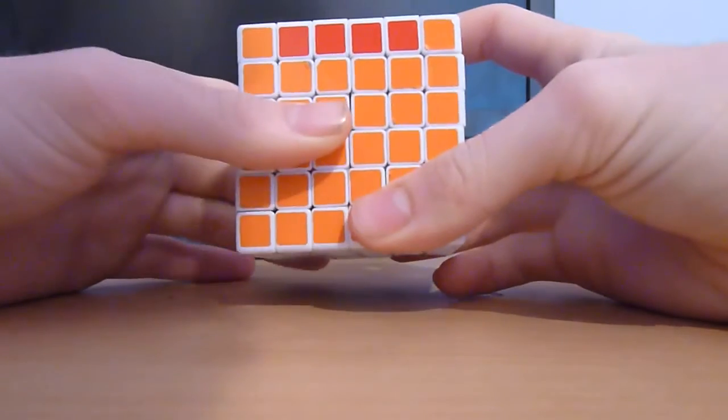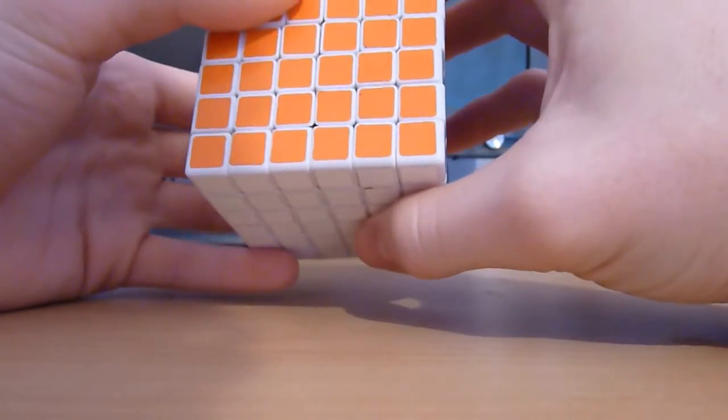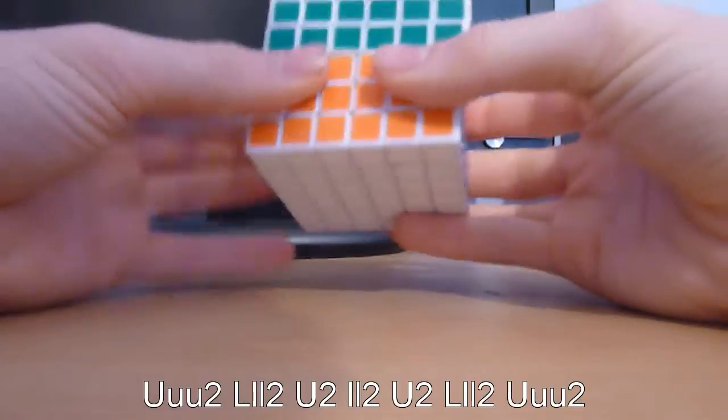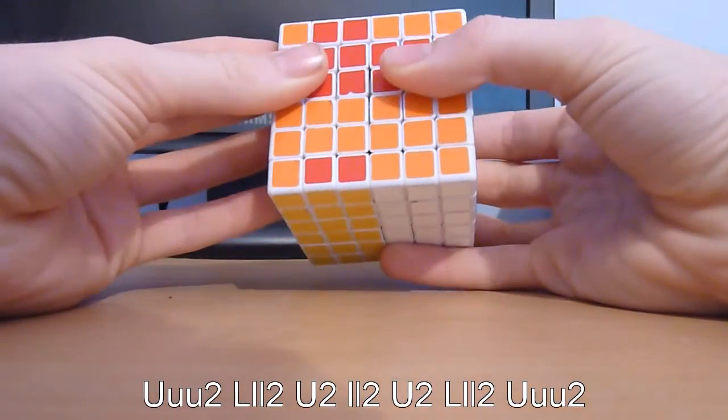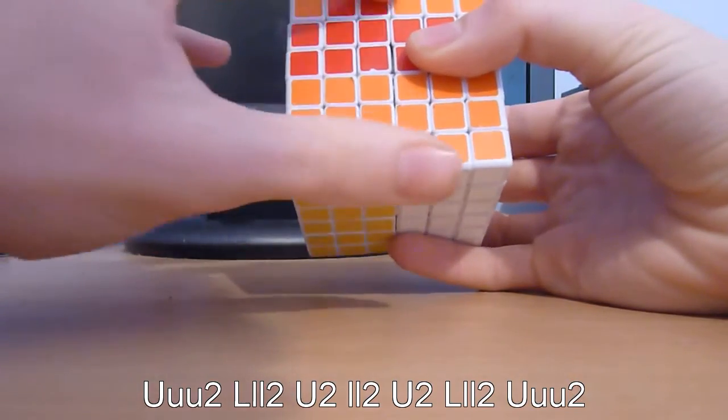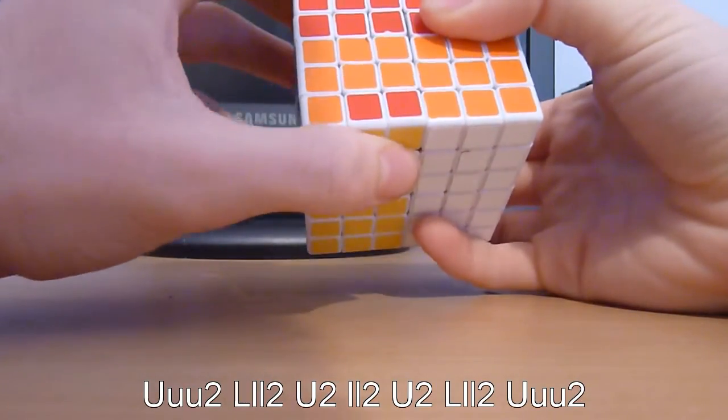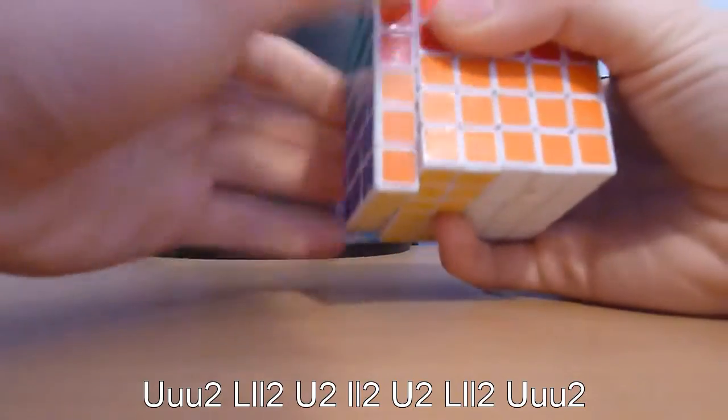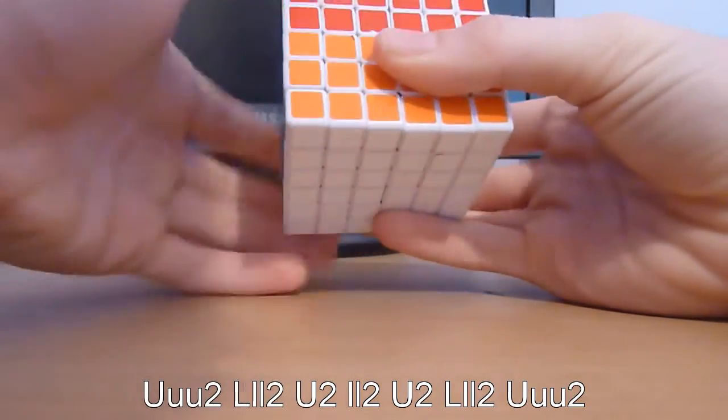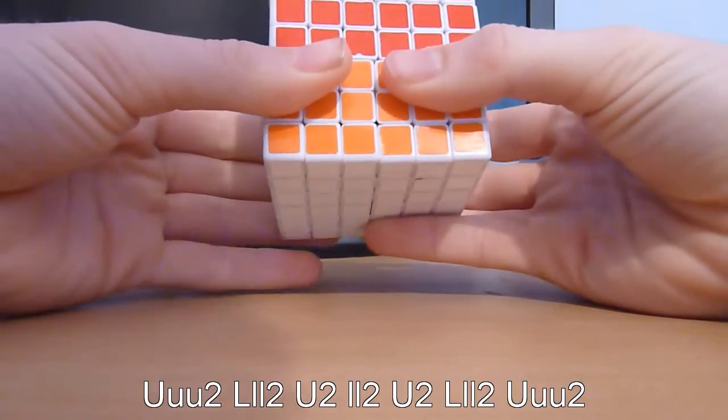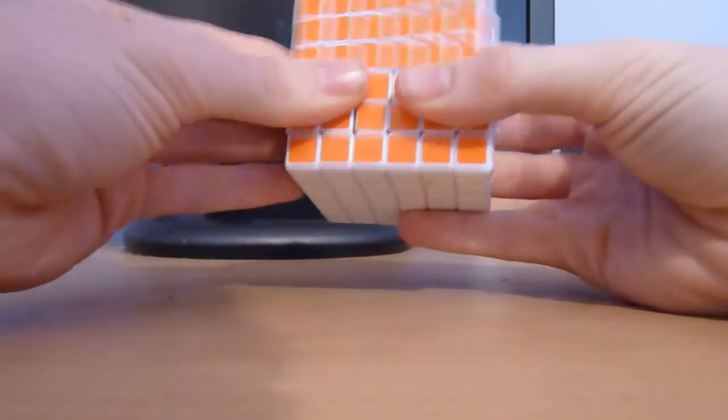So the algorithm is triple U2, triple L2, U2 these two layers twice, U2, triple L2, triple U2, and you switch them.